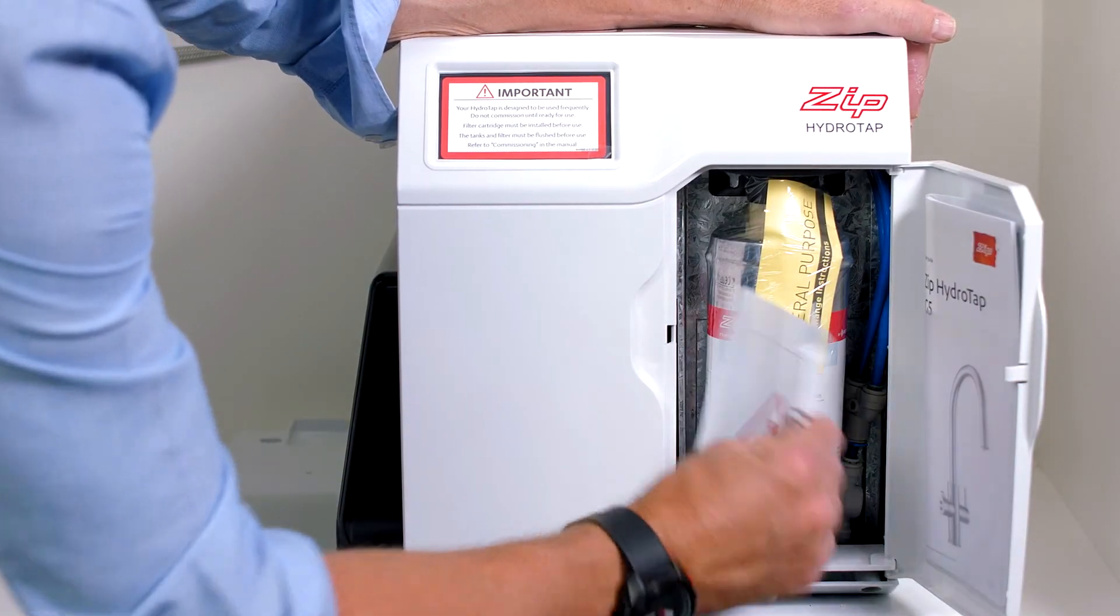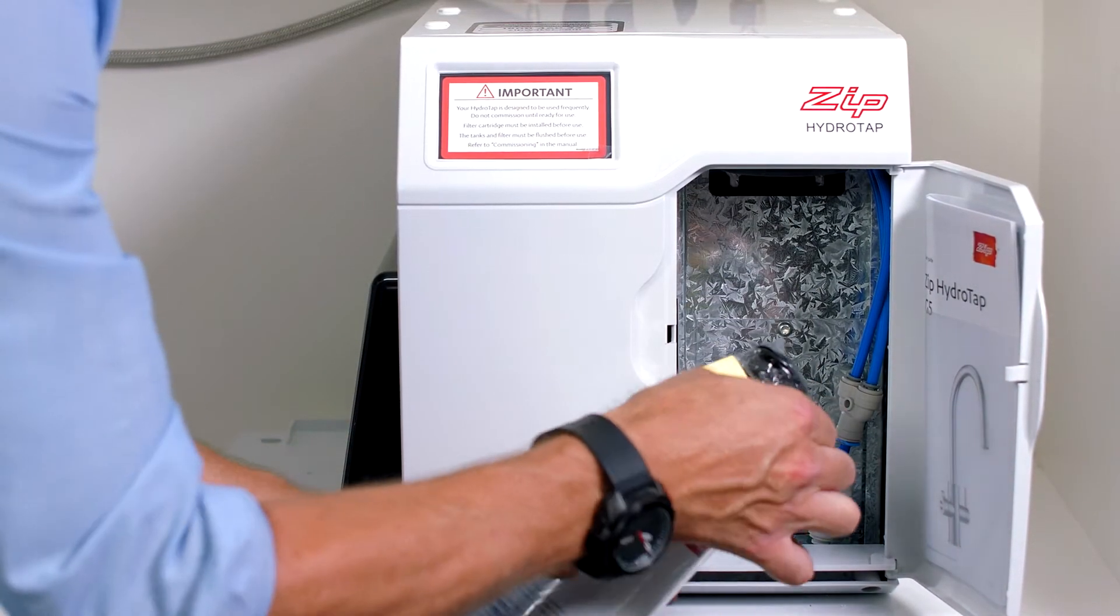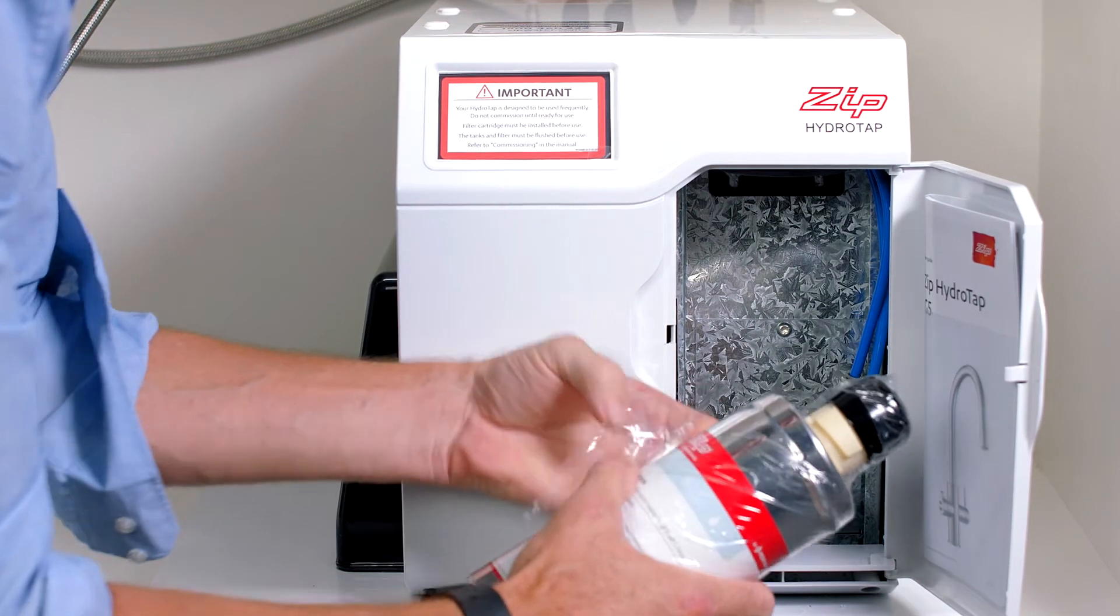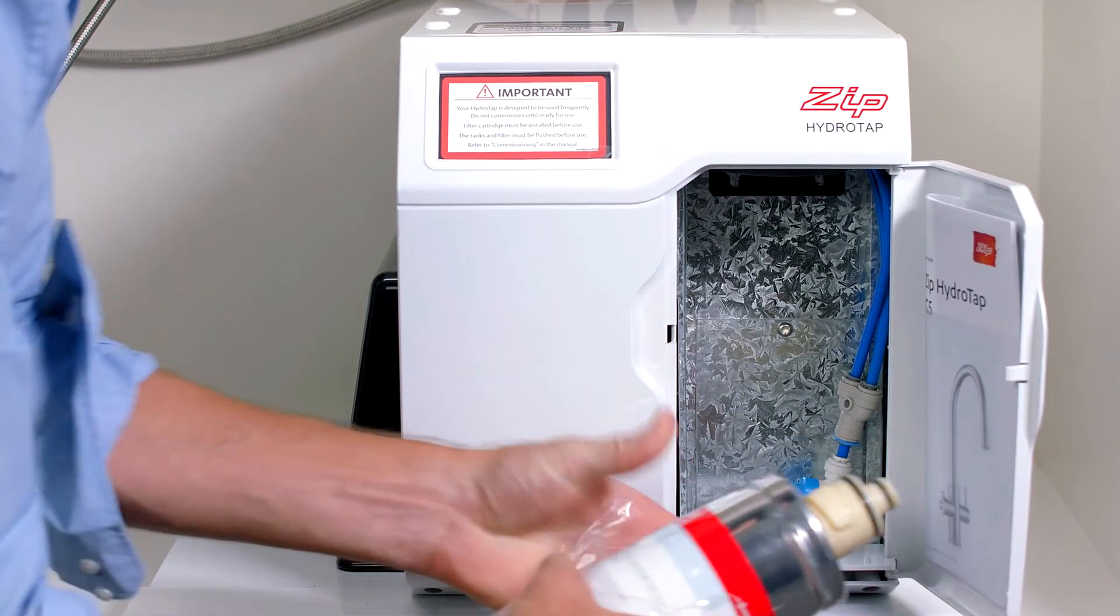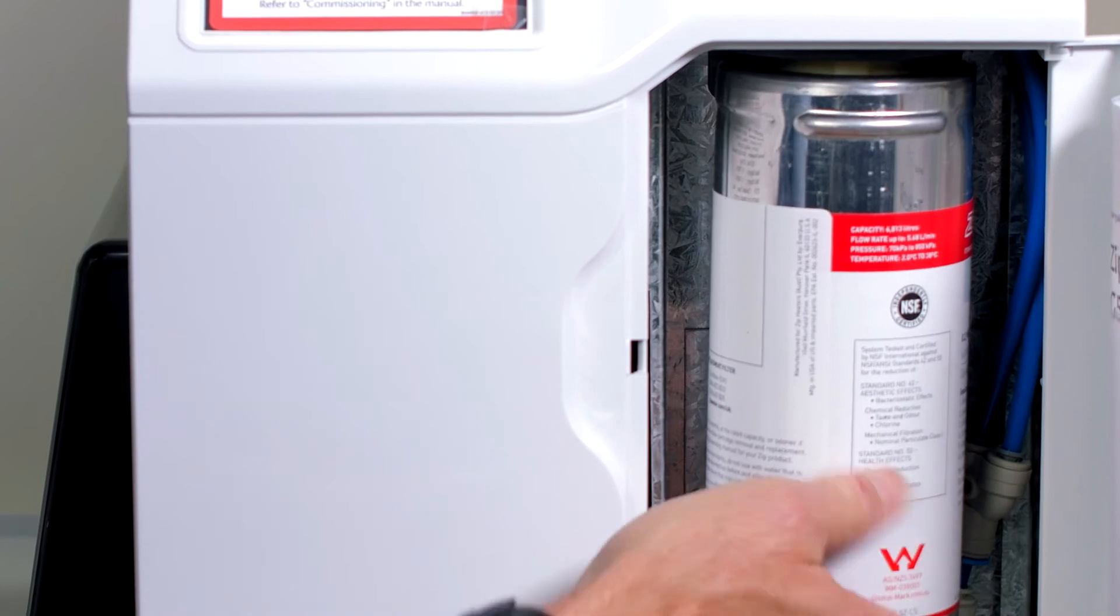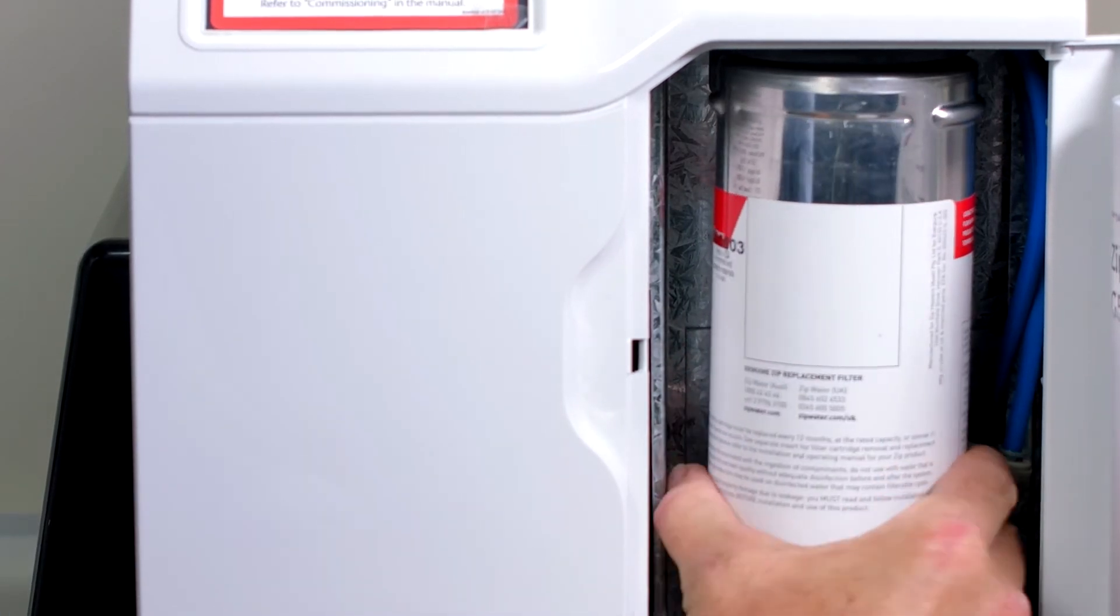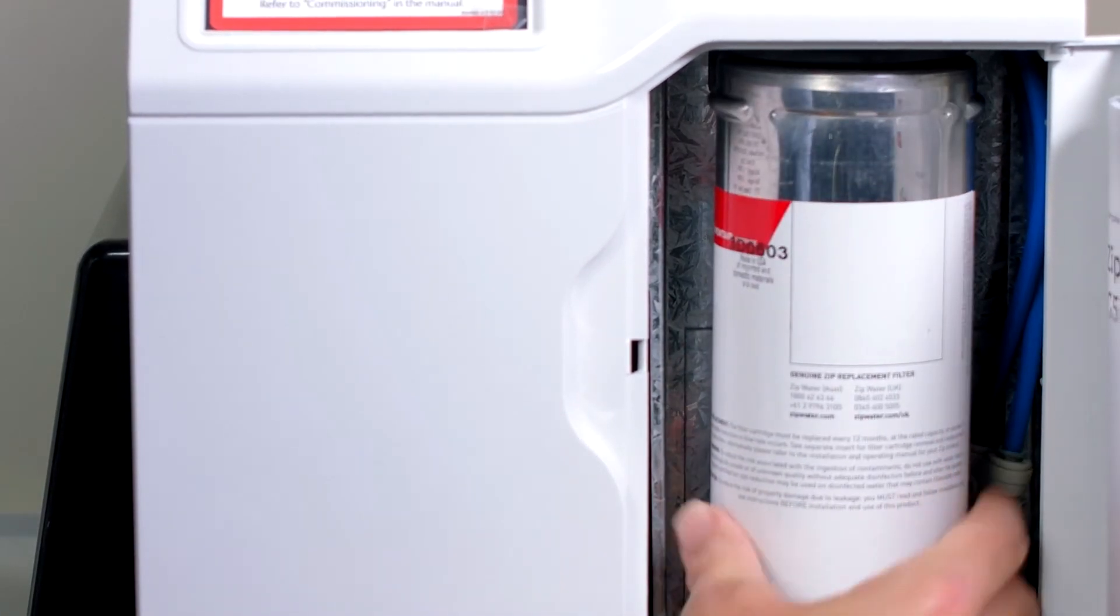The filter for the HydraTap comes loose in the filter compartment. Open the filter door, remove the plastic wrapping from the filter and fit the filter into the filter head. Locate the filter, push up and turn clockwise. The filter will stop turning when it's in place.